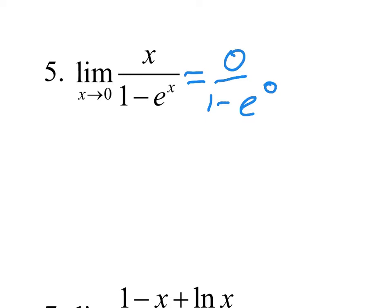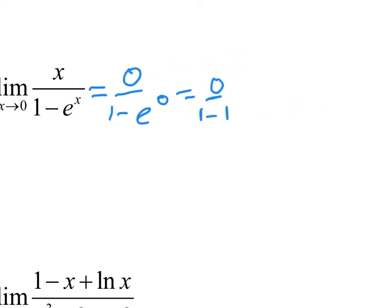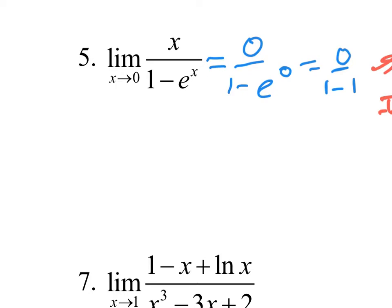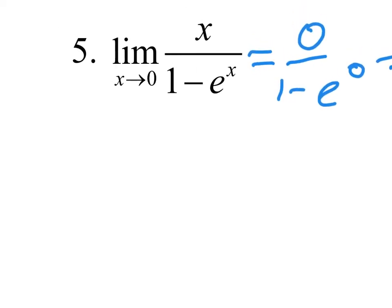So what is zero over 1 minus e to the zero? E to the zero is 1, so this approaches zero over 1 minus 1 — that's zero over zero. Indeterminate again. Can I factor it? It's not factorable. Could I graph it? Sure, if a calculator is allowed. So I'll write 'by L'Hôpital' to let them know why we're doing what we're doing.